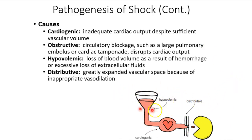Hypovolemic shock means low blood volume — an obvious example is bleeding out from a stab wound, but also internal bleeding or slow bleeds. Cardiogenic shock means the heart isn't pumping — most commonly associated with myocardial infarction, or cardiac tamponade, which prevents cardiomyocytes from filling and contracting, so blood can't be pushed forward and tissues aren't oxygenated.